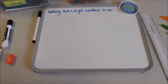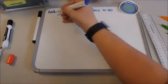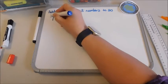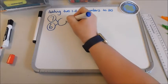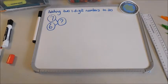Today I'm going to show you how to add two one-digit numbers to 20. So I'm going to add the numbers seven and six together. At the moment, I don't know what my answer is.